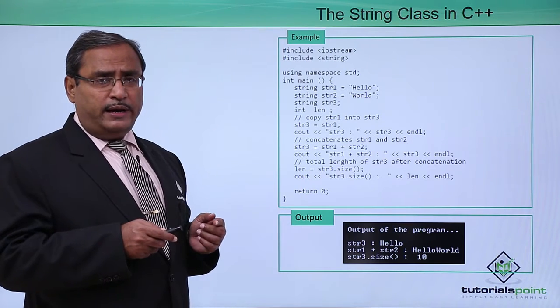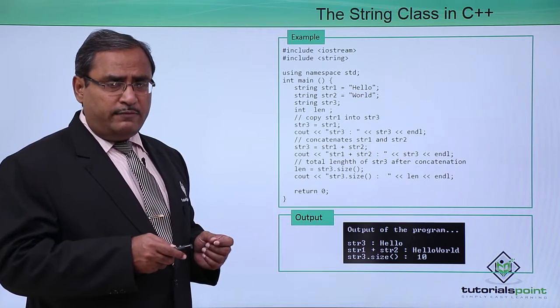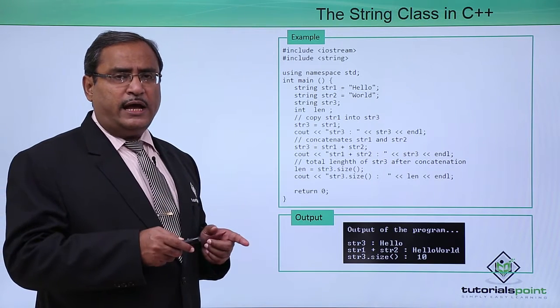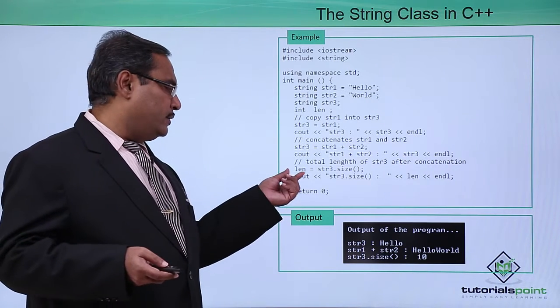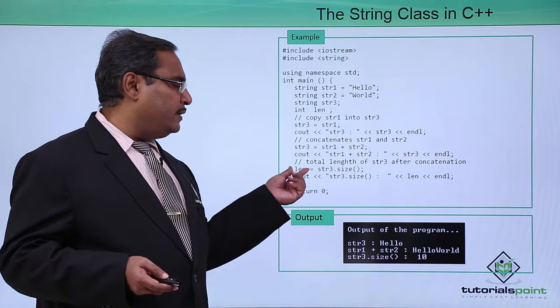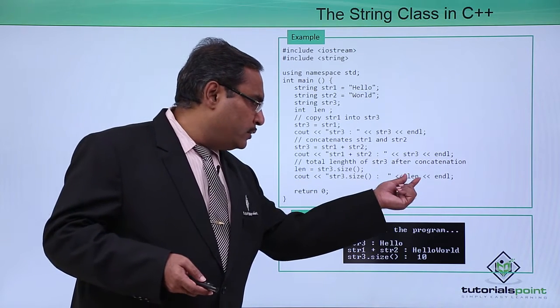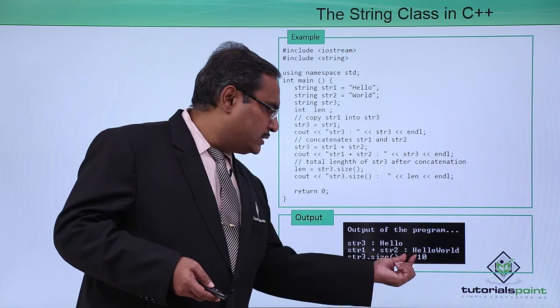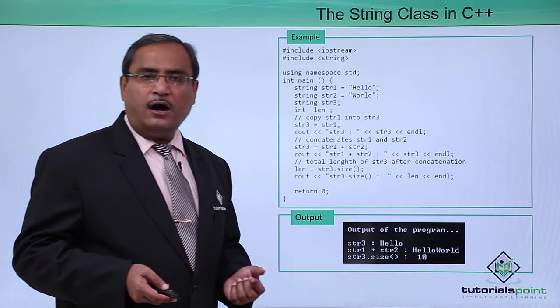Hello is containing 5 letters, world is containing 5 letters, so after concatenation hello world will be containing 10 letters. We are supposed to get this len initialized with 10 and whenever we print this len, we are supposed to get this 10 as output.